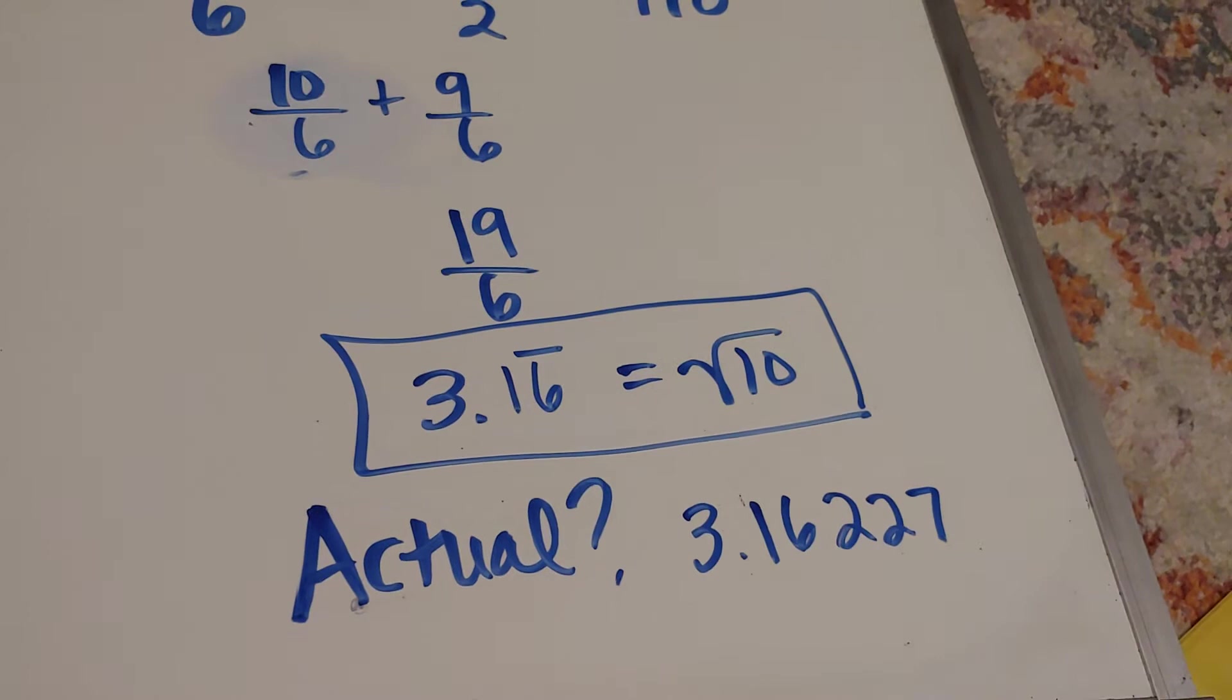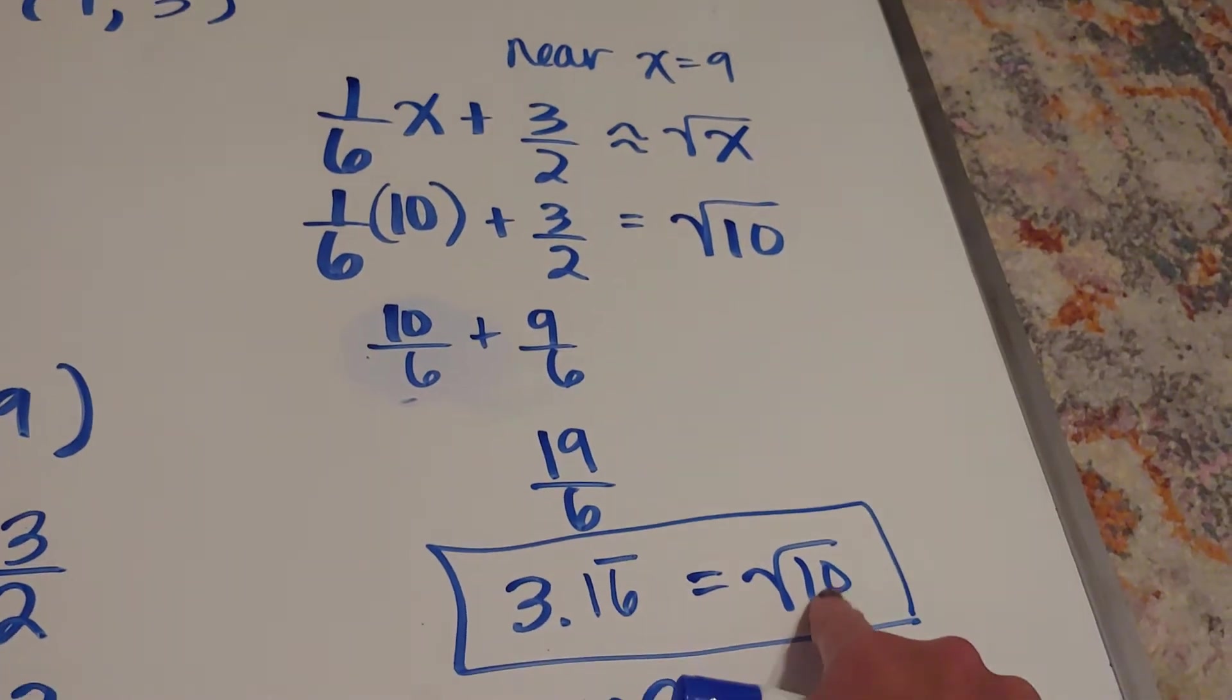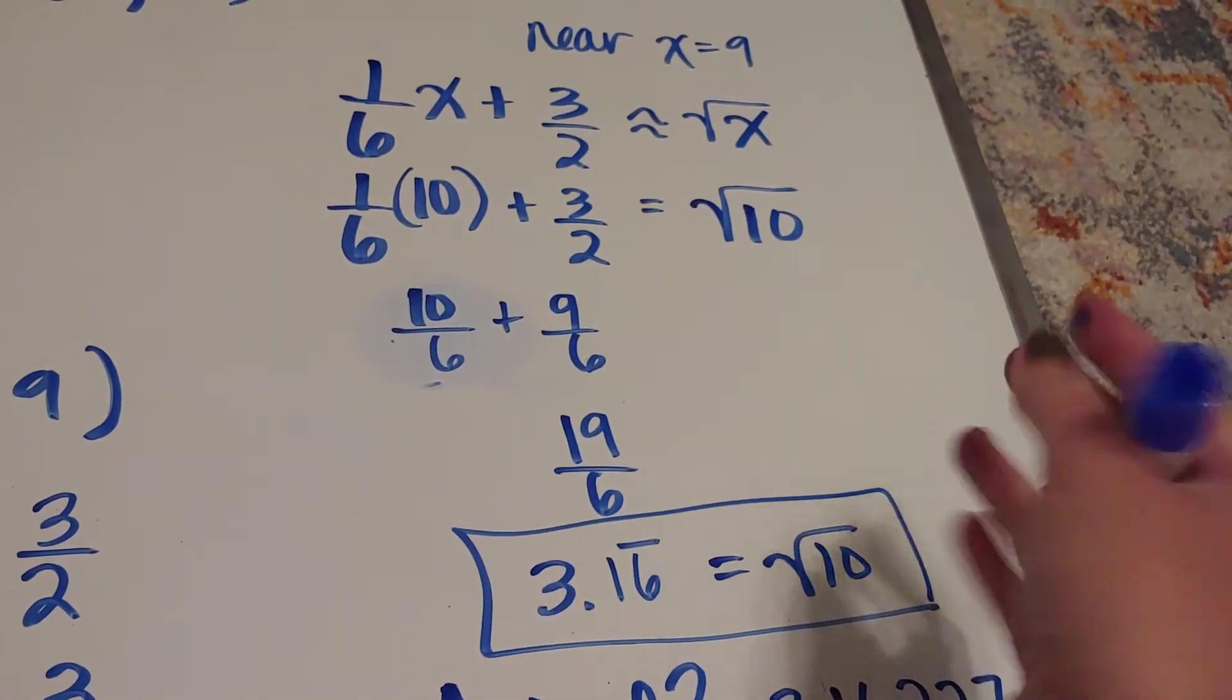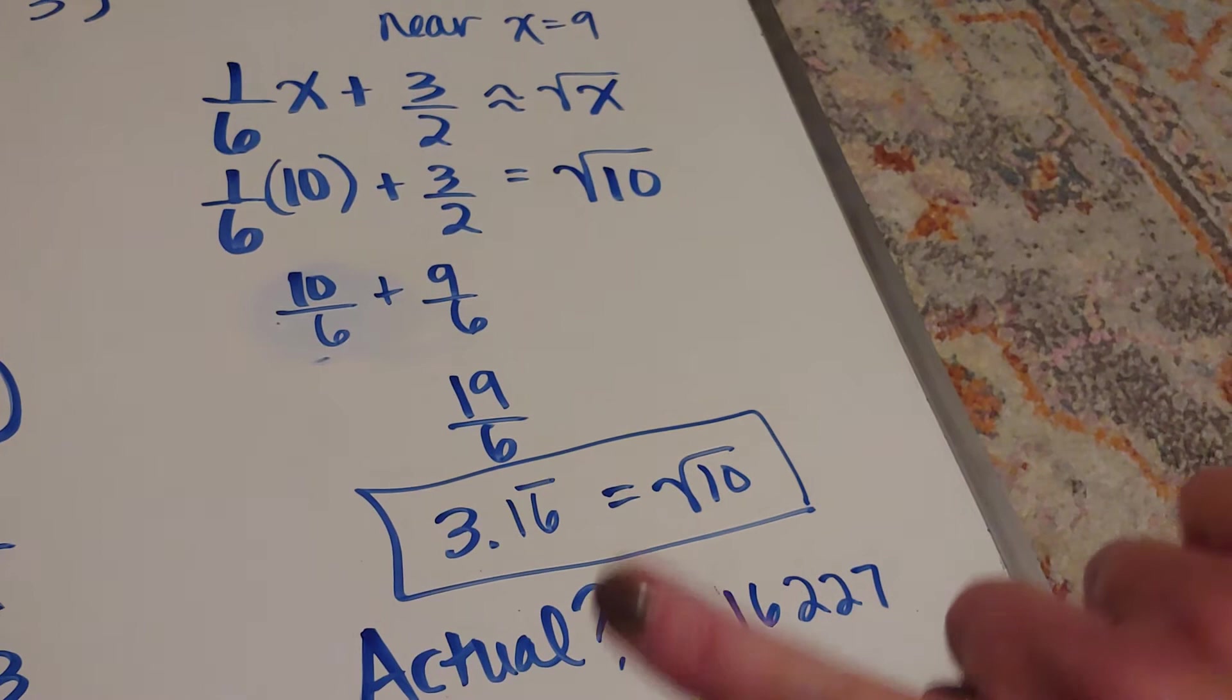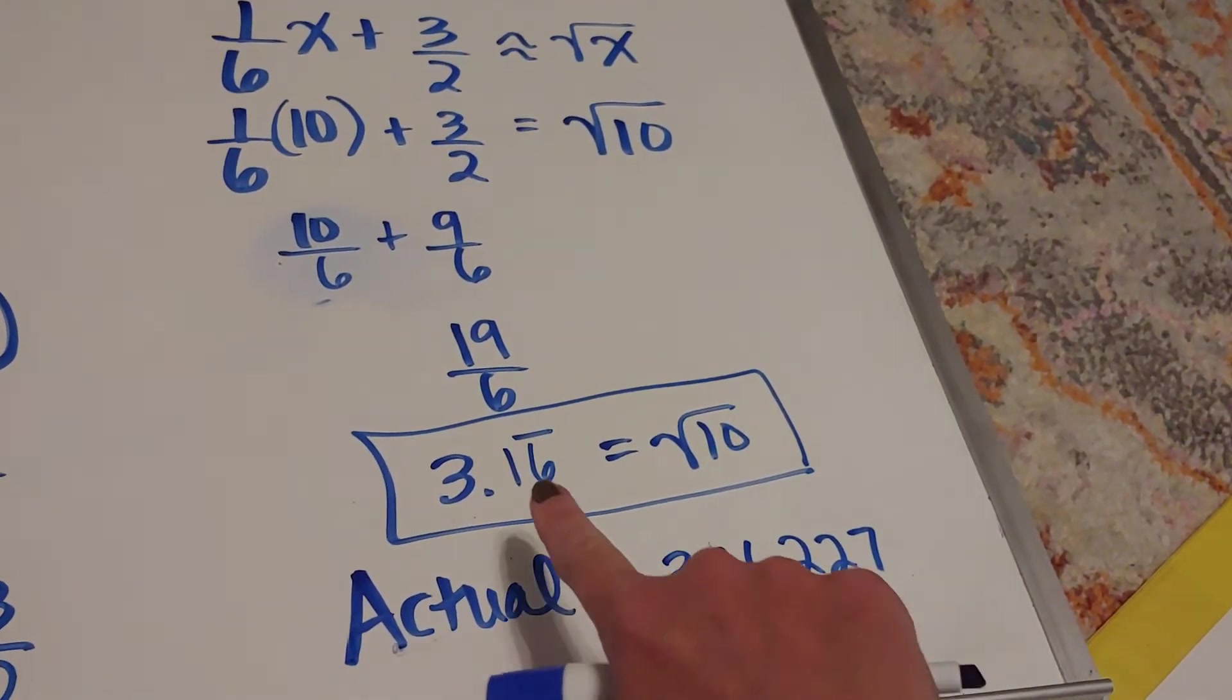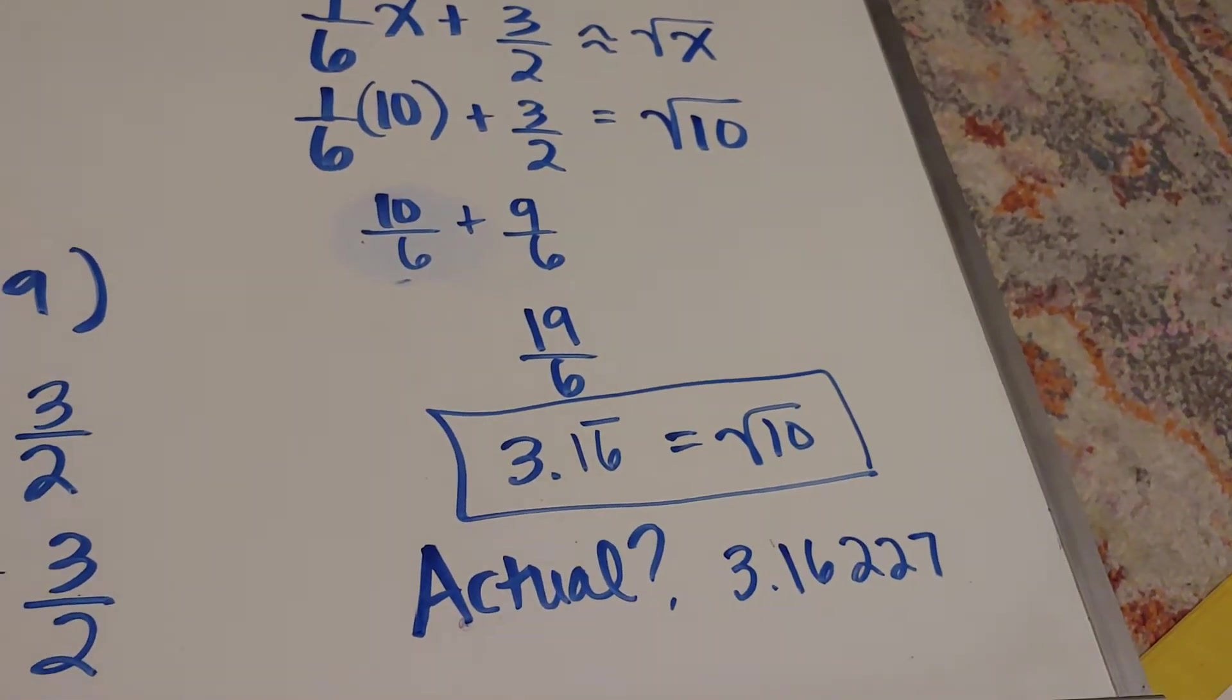That should happen because we stuck close to our value of nine. Being close to our value means that it's going to be good. And the square root function doesn't grow very quickly. Once you get past the initial curve, it's kind of flat for a while. So what's happening because it's flat for a while is that this line actually closely models this function for quite a bit.